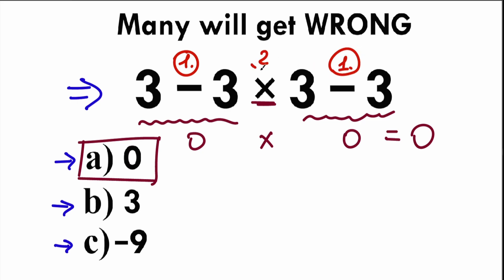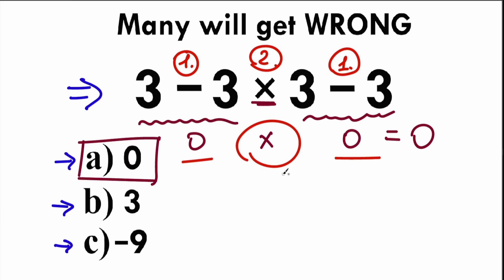And we have this multiplication in the middle as a second step. So the first step is subtraction on both sides, and the last step is this multiplication. So is it correct or not? For better understanding this principle, we should know about order of operation, because right here you can easily see that we solved this question absolutely randomly — we just jump from left to right, chaotically.